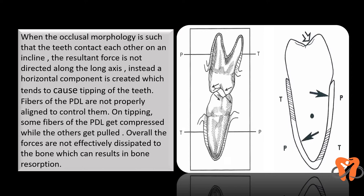When the occlusal morphology is such that the cusp tip contacts an incline, the resultant forces develop a horizontal component, and this can lead to tipping of the teeth. The horizontal component of force causes the periodontal ligament fibers to get compressed on one side, leading to bone resorption due to pressure. On the opposite side, the fibers get stretched and tension is created. Because of these imbalanced forces, the tooth tends to tip and the forces are not effectively dissipated, resulting in bone resorption.